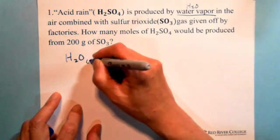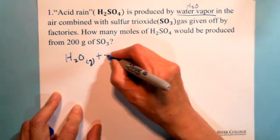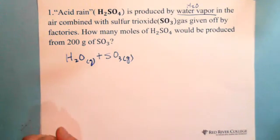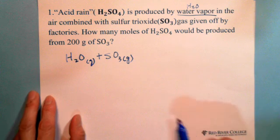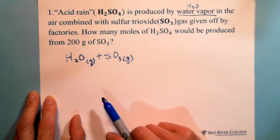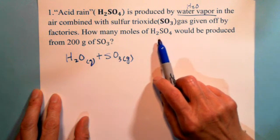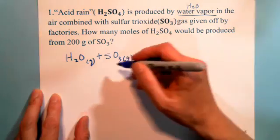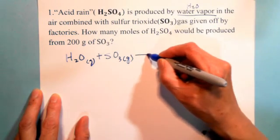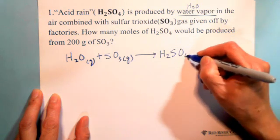H2O in the air combined with sulfur trioxide, which is SO3. So we write H2O gas, which is water vapor, plus SO3, which is also sulfur trioxide gas. This is the gas given off from the factory — that's why they release pollution. Water vapor plus sulfur trioxide produces H2SO4, acid rain.